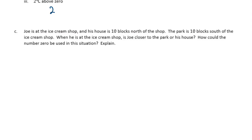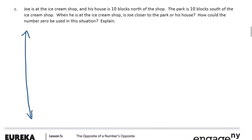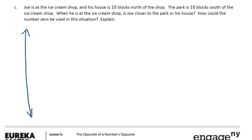Joe is at the ice cream shop, and his house is 10 blocks north of the shop. The park is 10 blocks south of the ice cream shop. When he is at the ice cream shop, is Joe closer to the park or his house? This is easier to visualize, so I'm going to draw a number line. Joe's at the ice cream shop — I'll call that the ICS.